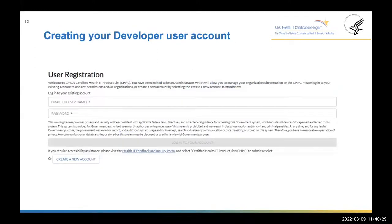Clicking the link in the initial email will bring you to the account creation page. If you're creating an account for the first time, you'll see a 'Create a New Account' button at the bottom. Note that creating an account will initiate a second email invitation, and you must click the link in that email to fully create and activate your account. If you already have a user account and are receiving an invitation to link your account to a new developer organization, you can fill out your email and password and simply log in to associate your account to the new organization. The login is case sensitive, so enter your credentials exactly as they were created.